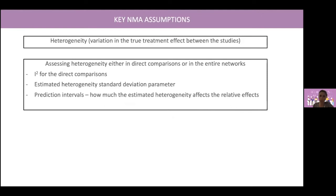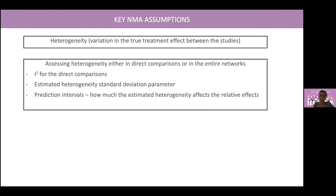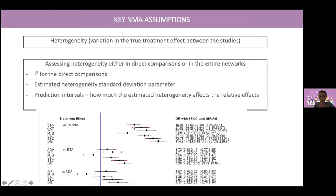You need to assess heterogeneity in the entire network using estimated heterogeneity standard deviation parameters, which you can find in the league table. If the tau is null, there is no heterogeneity. In case of heterogeneity, the author could provide prediction intervals, which assess how much the estimated heterogeneity affects the relative effect. In the forest plot, the dark line represents the 95% confidence interval and the red one the prediction interval. In some cases, this could change your result from significant to non-significant.